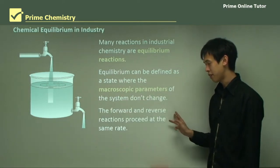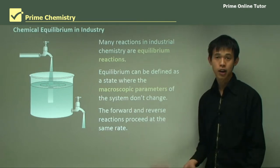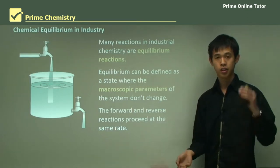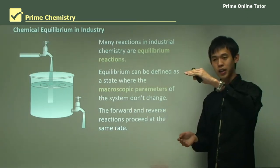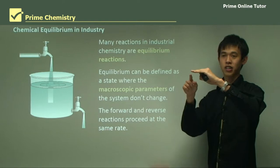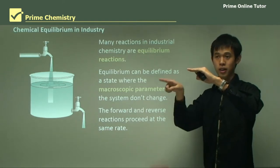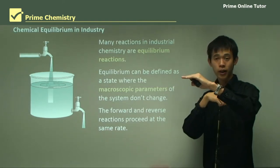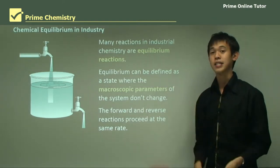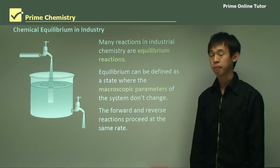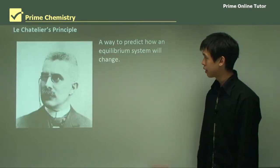What it means is the forward and reverse reactions proceed at the same rate. If there's a reaction going one way, and a reaction that consumes the products and goes back the other way, then they must happen at the same rate.